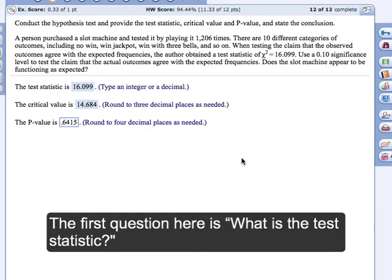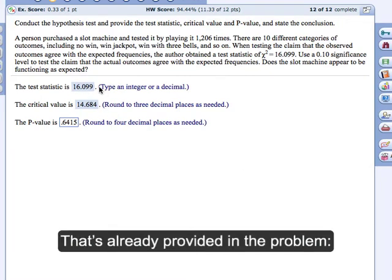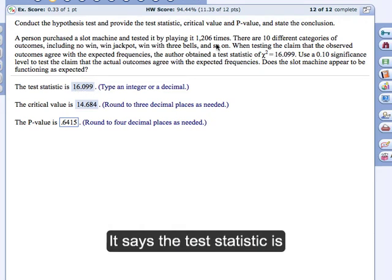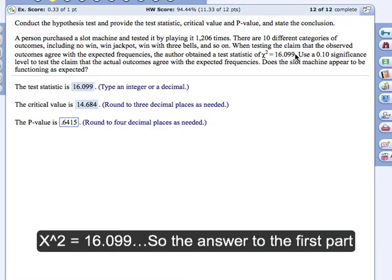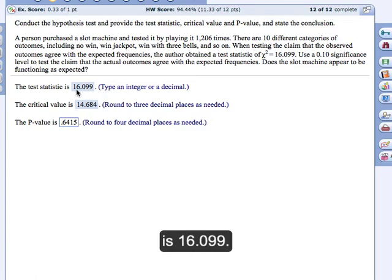So the first question here is, what is the test statistic? They're asking you for that. And that's already provided in the problem. You just locate it. It says the test statistic is chi-squared equals 16.099. So the answer to the first part is 16.099.